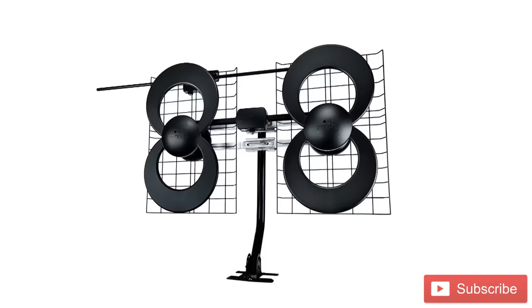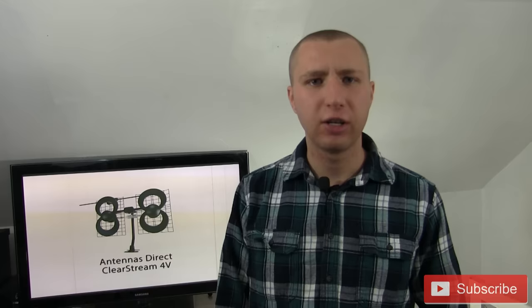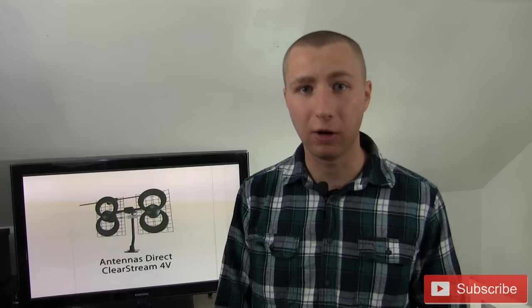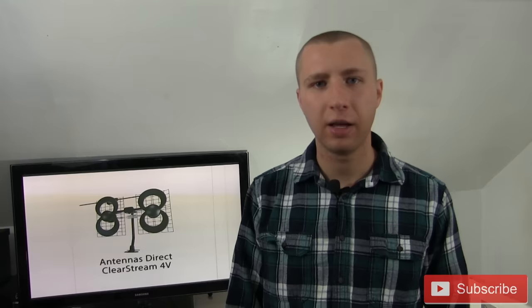Now getting into the actual antenna models, this model, the Antennas Direct Clearstream 4V does a really good job in most scenarios where you are within 60 to 70 miles of broadcast towers. You see most, if not all the stations show up on antennaweb.org and the stations in your market are either VHF high or UHF. In other words, the physical channel that they broadcast on are not on channels two through six. They're on either seven through 13 or 14 and above.